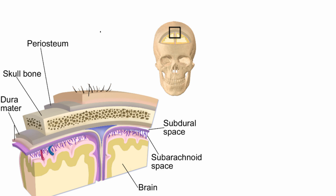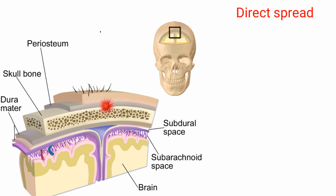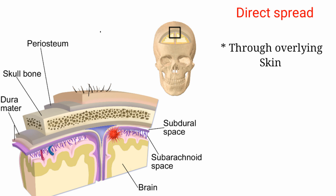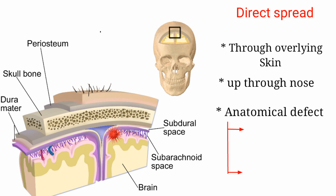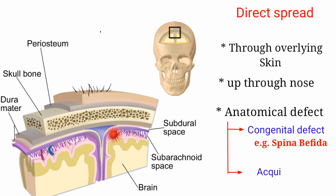There are two routes that an infection takes to reach the cerebrospinal fluid and leptomeninges. The first is direct spread, which is when a pathogen gets inside the skull or spinal cord and then penetrates the meninges, eventually ending up in the cerebrospinal fluid. The pathogen may come through overlying skin or up through the nose, but it is more likely that there is an anatomical defect — for example, a congenital defect like spina bifida, or an acquired one like a skull fracture.